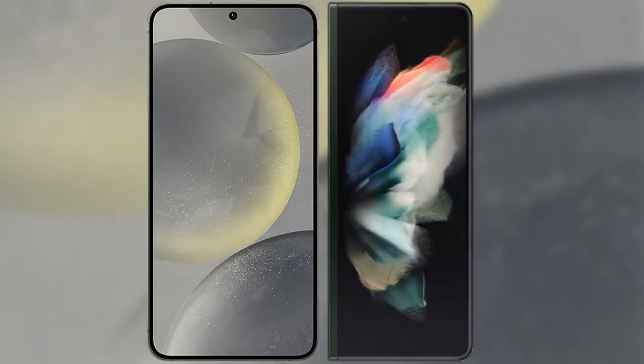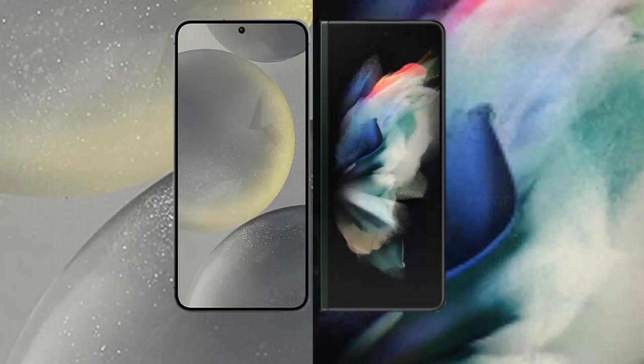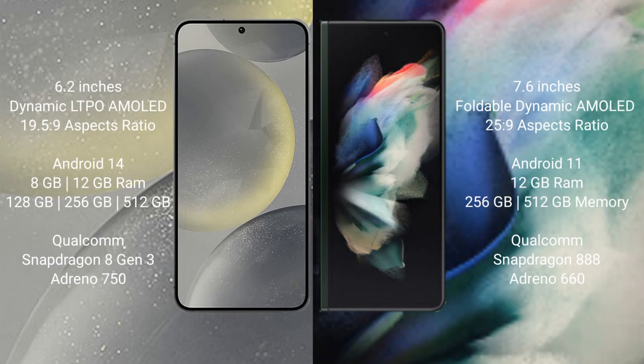I will compare the new Samsung Galaxy S24 with Samsung Galaxy Z Fold 3. Samsung Galaxy S24 has a 6.2-inch dynamic LTPO AMOLED display and Supervisor 19.5:9. Samsung Galaxy Z Fold 3 has a 7.6-inch foldable dynamic AMOLED display and Supervisor 25.9.